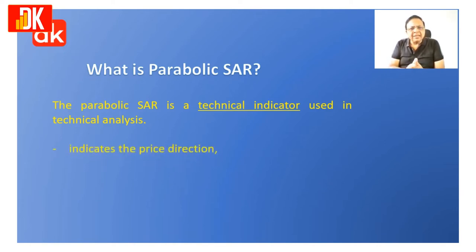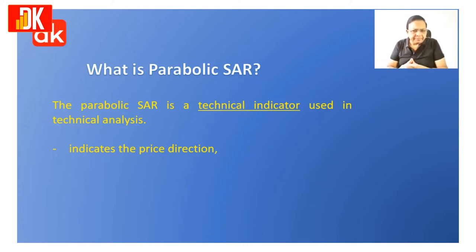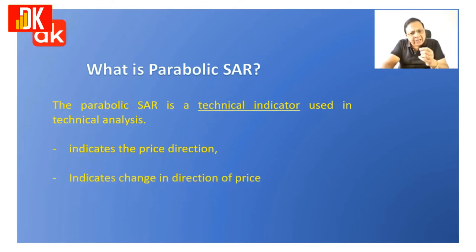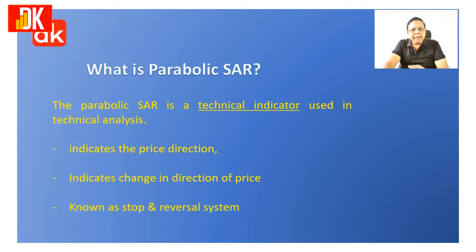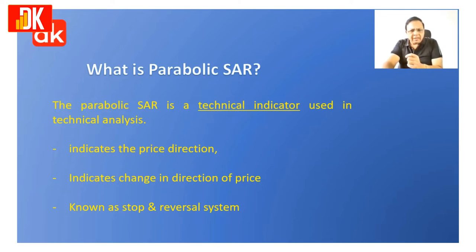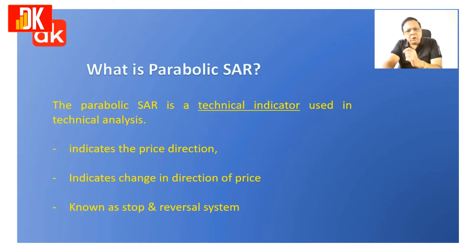This is an indicator which indicates the direction of the price — the trend of the market — and the price is likely to move in a particular direction. It also indicates the change in the direction of the market because the market is likely to reverse, and hence the name is Parabolic SAR: Stop and Reversal. However, if a market is sideways, this indicator is not at all useful and should never be used, as it will give many wrong signals during sideways or range-bound markets.